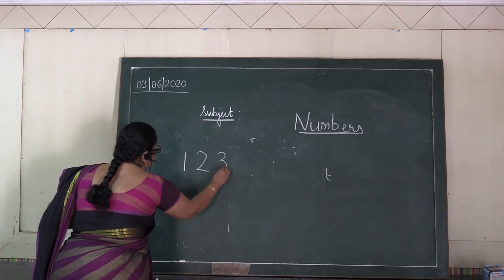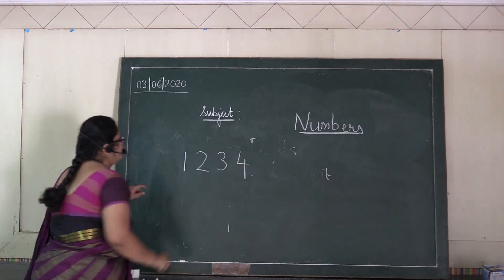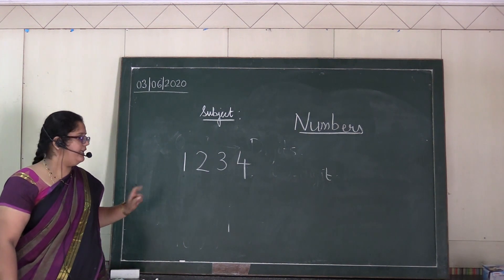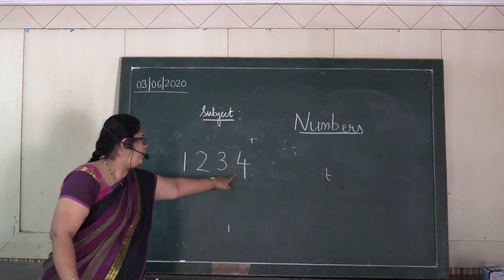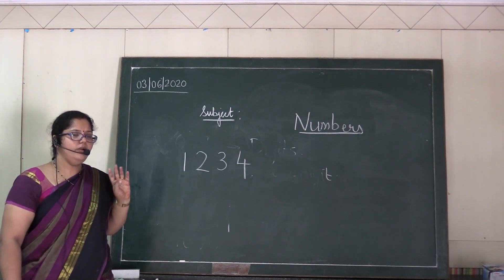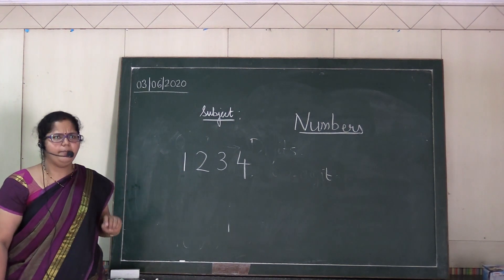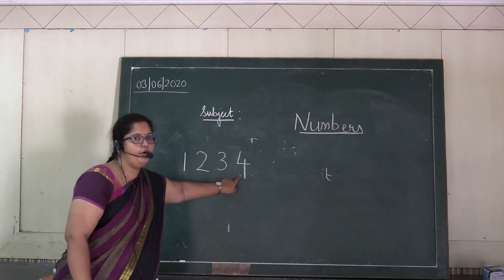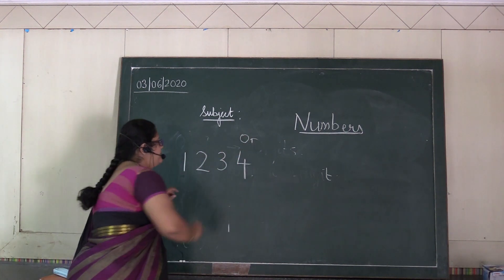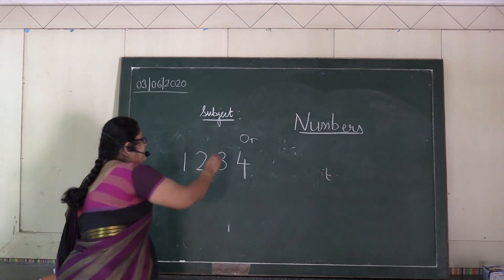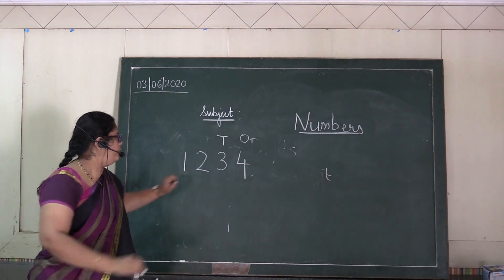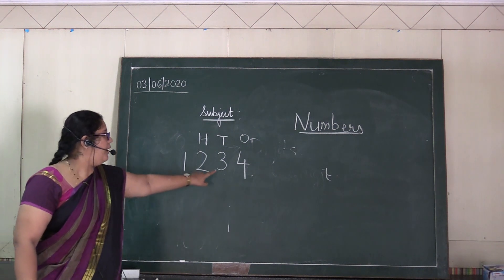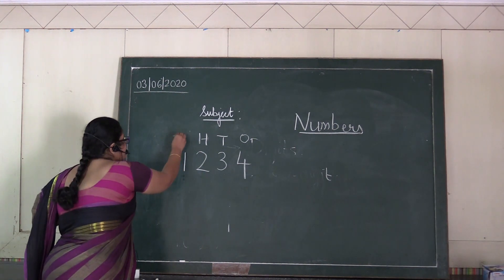Let's take an example — the number one, two, three, and four. How many digits are there? You just counted: one, two, three, four. So it's a four-digit number. Do you remember the places? Four is in one's place. Three is in ten's place. Two is in hundreds place. A new place will be added for a four-digit number, which is the thousandths place.